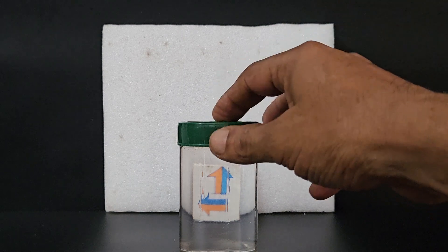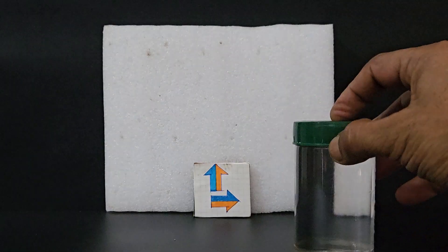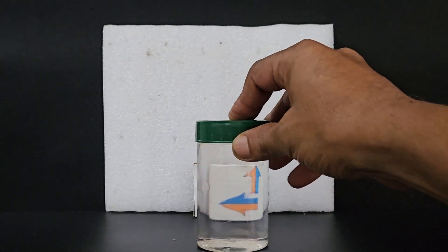Also if you note, the arrows look slightly bigger. Look at that and look at that. It can magnify the arrows using this water in the container.